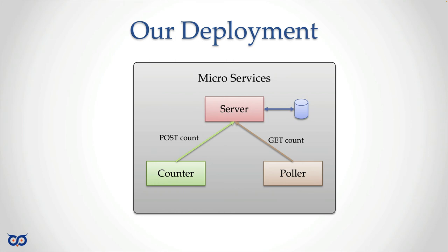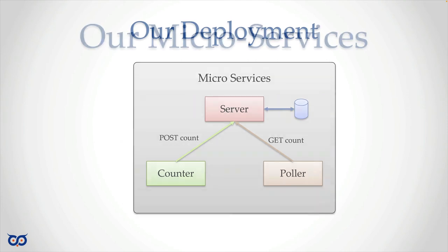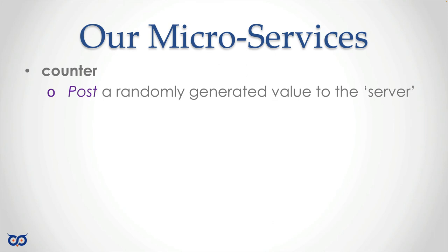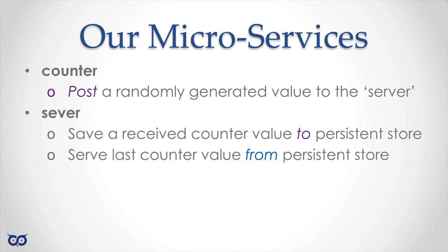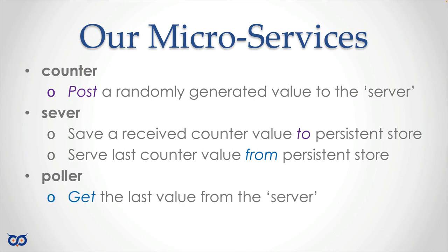That's why I call this 'many services' — we have about three here, or four if you count the data store as another service. Let's look at the specification. The Counter posts a randomly generated value to the Server. The Server saves a received counter value to a persistent store — we don't dictate what that looks like — and also serves the last counter value from the persistent store when someone asks. The Puller simply gets the last value from the Server.